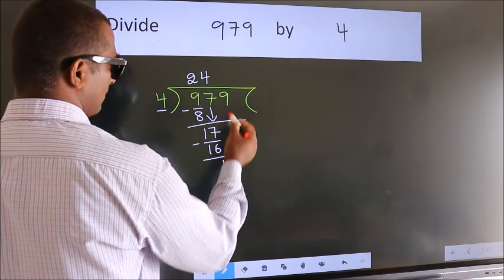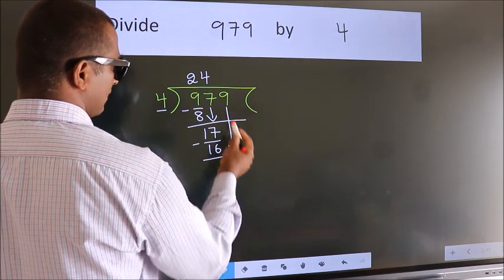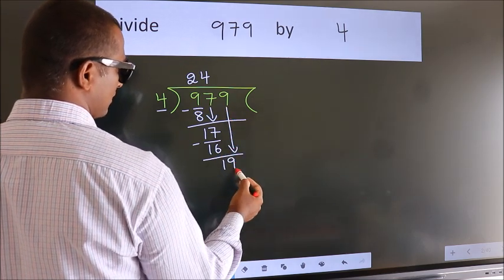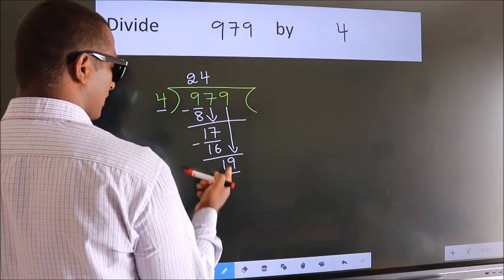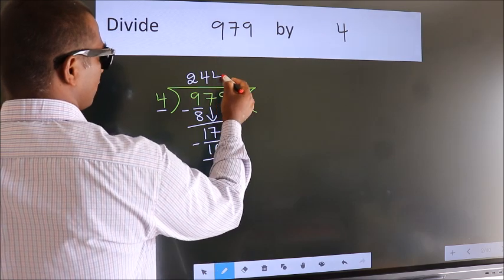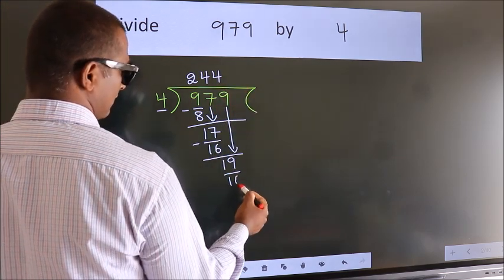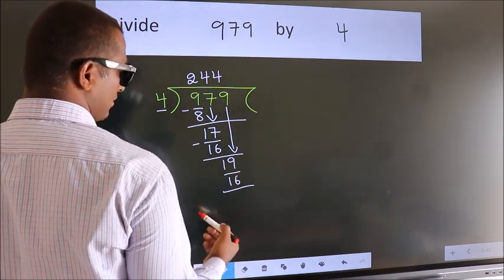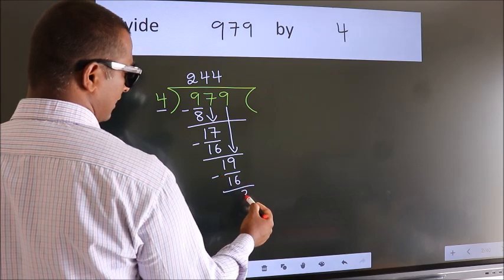After this, bring down the beside number. So, 9 down. So, 19. A number close to 19 in the 4 table is 4 fours, 16. Now we subtract. We get 3.